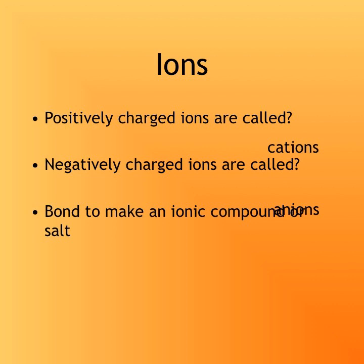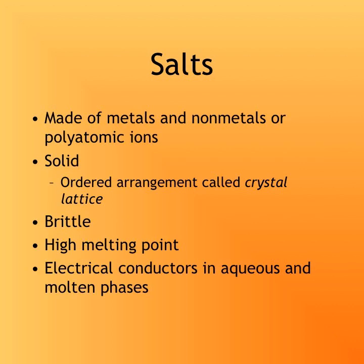Another name for an ionic compound is a salt. Salts are made of metals and non-metals, and may also include polyatomic ions. Salts are solid at room temperature, have a very organized arrangement known as a crystal lattice, and are brittle — meaning they would shatter if hit with a hammer rather than dent like a metal. They have very high melting points and are good conductors of electricity in aqueous and molten phases. If you dissolve any ionic compound in water, it will conduct electricity.